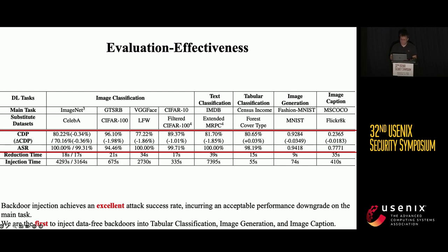We evaluate our backdoor injection approach on five different mainstream tasks using DNN models with different architectures. Our attack achieves an excellent attack success rate on the poison samples, but only causes little performance degradation on the main task. Moreover, we are the first to inject data-free backdoors into tabular classification, image generation, and image captioning tasks.